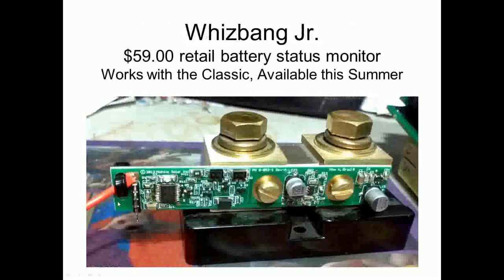Here's something new we're coming out with — the Whiz Bang Junior. We actually have the boards now. It hooks up to the Classic, Classic Lite, or the upcoming KID, a smaller controller. This allows the Classic to turn into a real shunt-based battery status monitor that's counting coulombs, similar to the TriMetric. It only costs $59, and because we're not running long wires from the shunt, it's going to be more accurate with much less noise. All the measurement is done directly across the shunt, sending digital signals back to the Classic via just one wire.